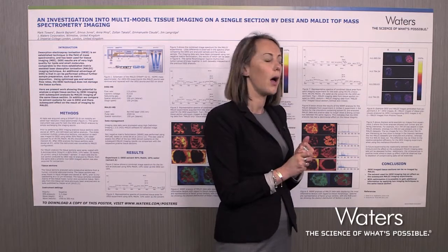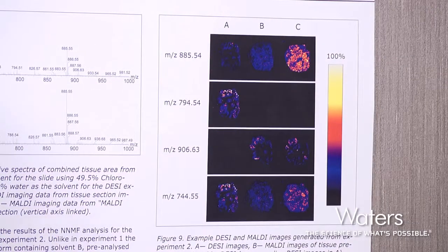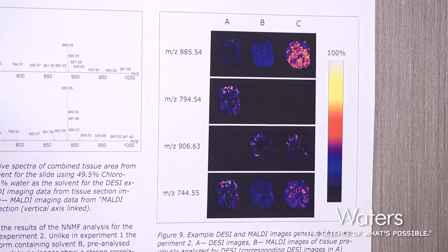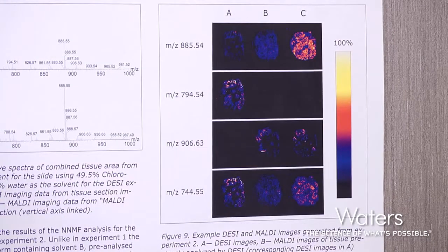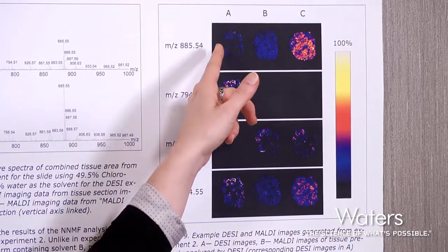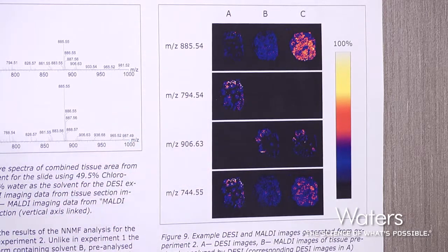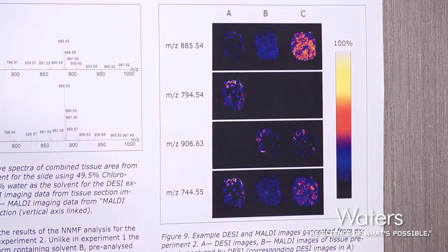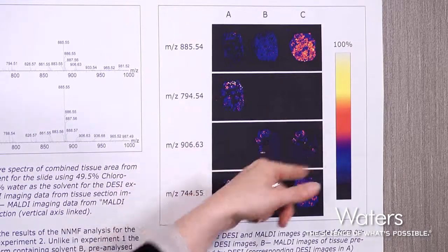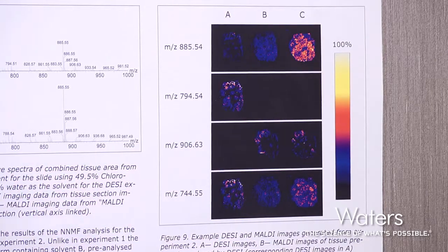We also wanted to compare the type of information we get between DESI and MALDI. In figure 9 we illustrate that between DESI and MALDI we have complementary information. For the lipid at m/z 885.5, intensity is more prominent in the MALDI-only experiment. For the lipid at m/z 794.5, we only get information in the DESI-only dataset. For m/z 906.63, we only get information from MALDI, so the DESI ionisation didn't work well. And for m/z 744, the ionisation is comparable across all three datasets.